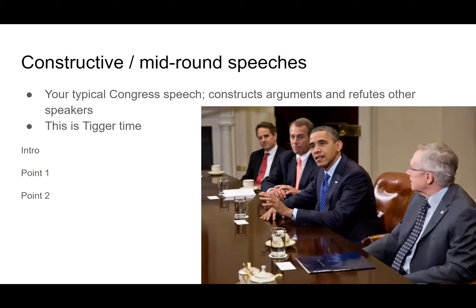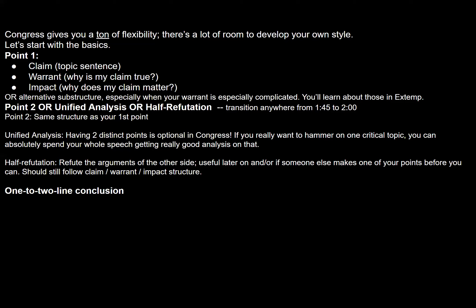Now it's time for constructives, which are generally the most important part of the round. A constructive both constructs specific arguments and refutes other speakers that have said the opposite. You want to bring out the most unique and powerful arguments you have at your disposal. There are a lot of different ways to structure a constructive speech, but let's go over the basics. Generally, your points are going to follow a structure called claim-warrant-impact, which is kind of like an Extemp point but with one sub-point missing. The claim is the topic sentence of your argument — it's the words you want the judge to remember that summarize the whole of what you're trying to say.